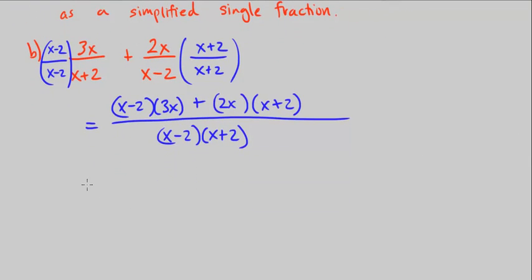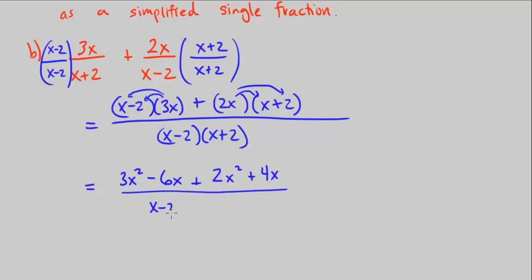Let's go ahead and simplify this. Let's distribute the 3x to both terms. So that's 3x times x is 3x squared. 3x times negative 2 is minus 6x, plus let's do the same with 2x. 2x squared plus 4x. All over, let's leave this for now, x minus 2 times x plus 2.